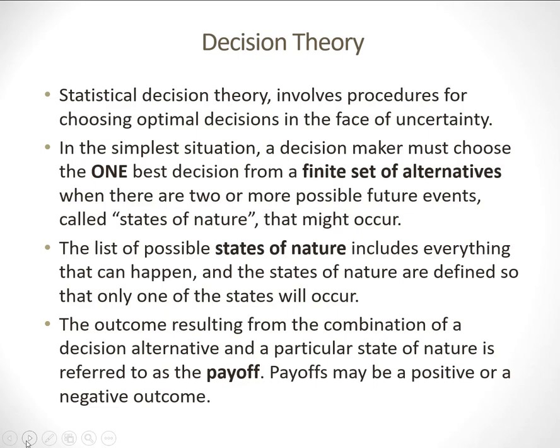What's going to happen is they're going to make this decision and in the future there will be two or more possible states of nature or conditions that will exist. What we know about states of nature is only one state of nature can occur. We can also look at our decision alternative and a potential state of nature and determine what our payoff or outcome will be.